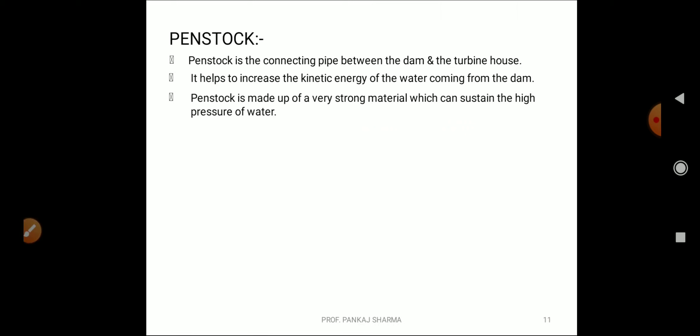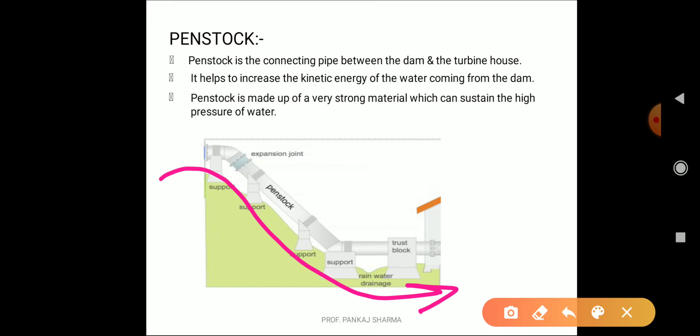Let's see penstock. It is the connecting pipe between the dam and turbine house. It helps to increase the kinetic energy of water coming from the dam. Penstock is made up of very strong material which can sustain the very high pressure of water, the hammering pressure of water. Penstock is very useful and plays very important part in your entire water chain. When water flows with high velocity, there is hammering effect, reverse effect into the pipes. When penstock is there, that adjusts and gives special and extra space for the hammering back of water just to safeguard the system.